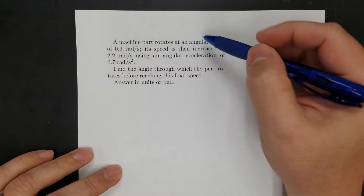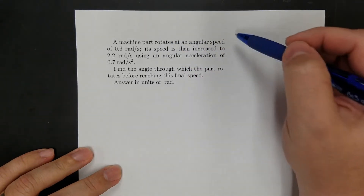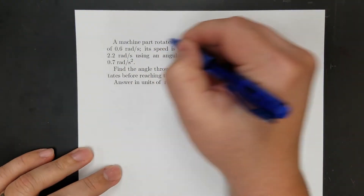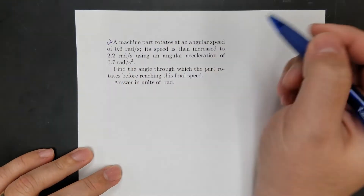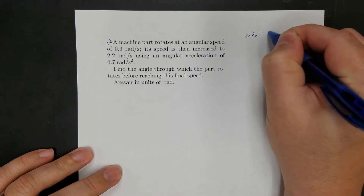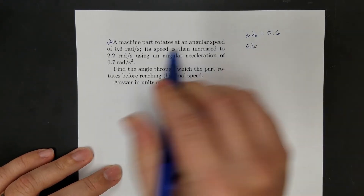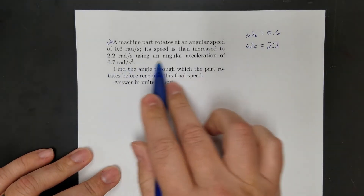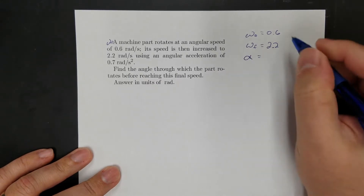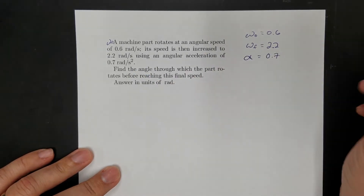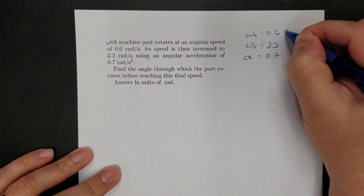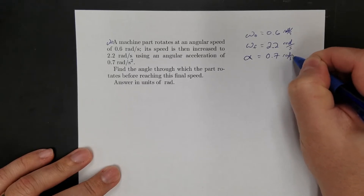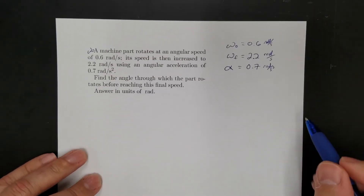Another one. A machine part rotates at an angular speed of 0.6 radians per second, and its speed is then increased to 2.2 radians per second with an angular acceleration of 0.7 radians per second squared. So my initial angular velocity is 0.6 and my final angular velocity is 2.2. It's helpful to write out what you have so you don't get lost when solving these.